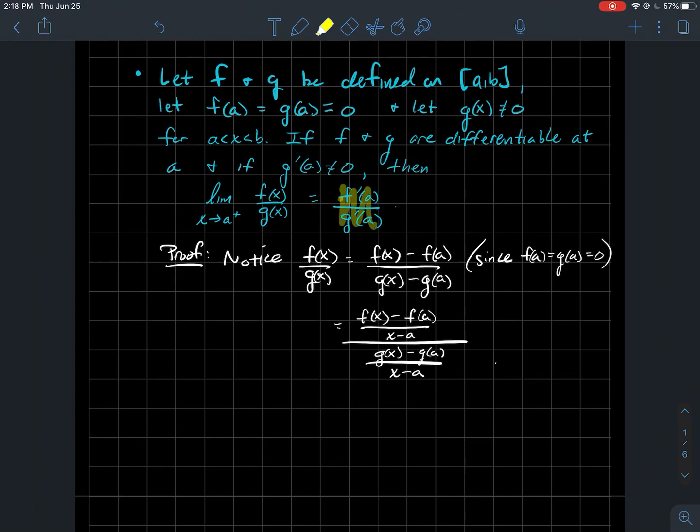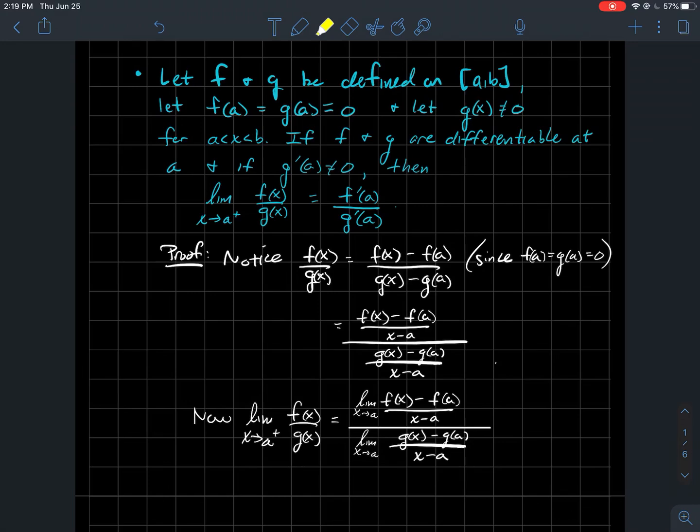And why on earth would I do that? Well, because I want to try to bring some information about the derivative in place, and now I see I've got the difference quotient for f, and I've got this difference quotient for g. And so what are we going to do? We're going to take the limit of both sides. The limit of this side should be equal to the limit of this side. And so if I write that out, I can take the limit of the top because it exists, is f prime of a.